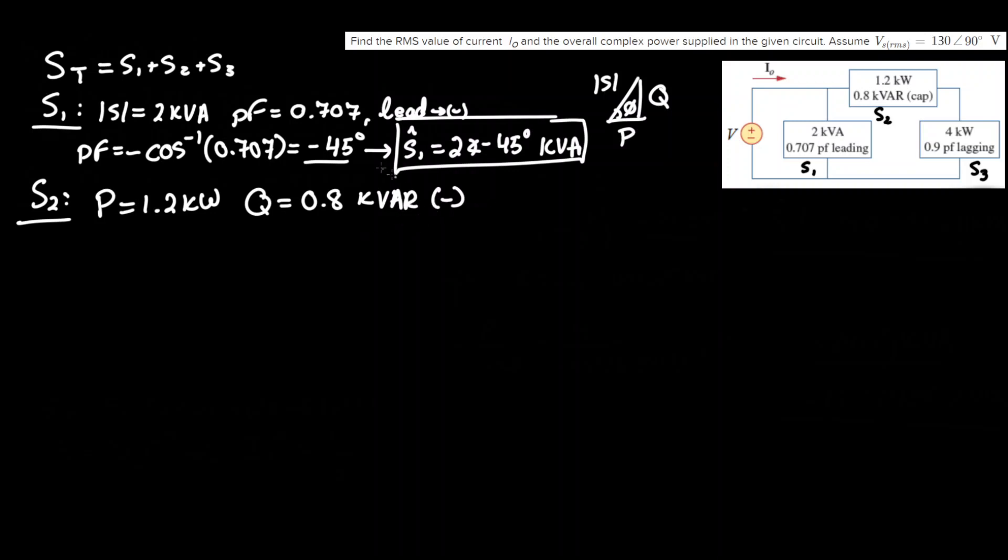And as we know for a complex power S, it is equal to in rectangular form the real power P plus imaginary component j times imaginary power Q. So here we are already given P and Q and they're both in kilo format, so all we have to do is simply plug that in.